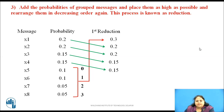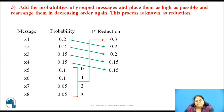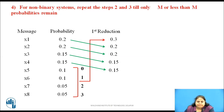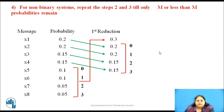After the first reduction, the number of terms is still greater than 4, so we need to continue this process until we get 4 terms or fewer in the last reduction. Again, the 4 lowest probability terms are grouped and symbols are assigned as shown.